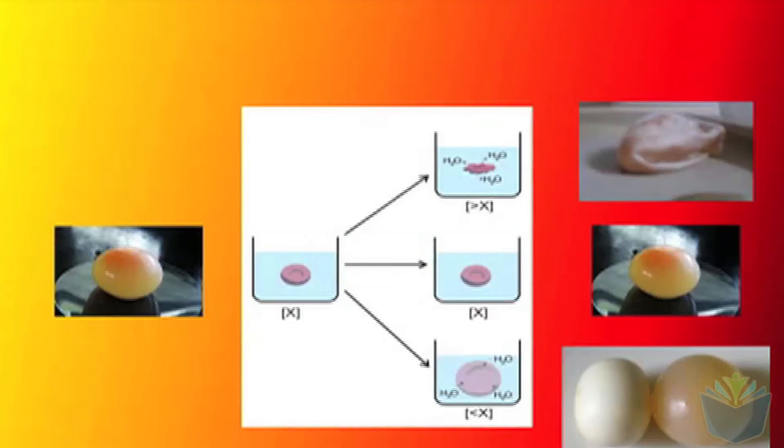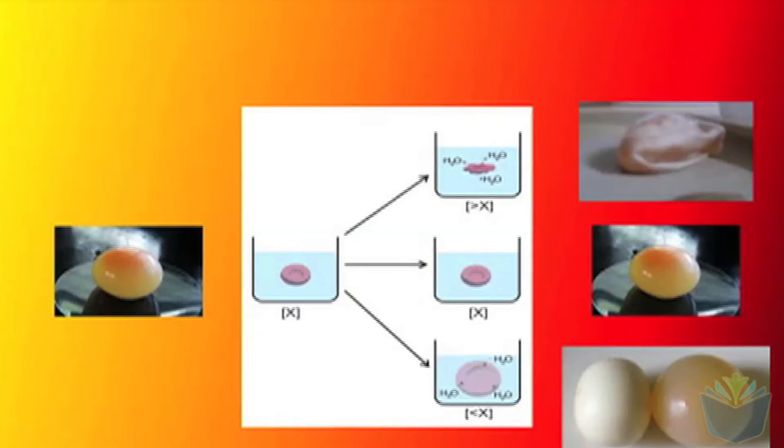Finally, the movement of water needs to be closely monitored and controlled by both plants and animals. This is done for a process known as osmoregulation. So for example here we've got a red blood cell and you can see in an isotonic solution it keeps its shape.